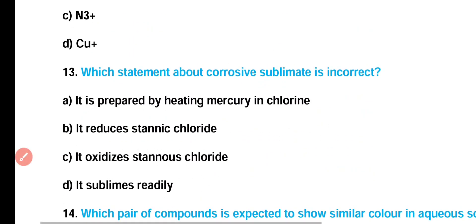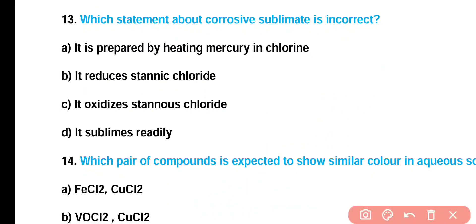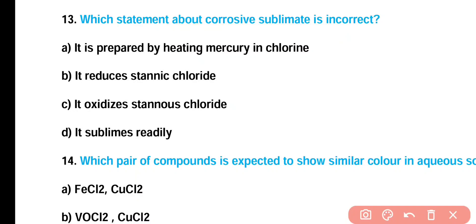Question number 13: Which statement about corrosive sublimate is incorrect — (A) it is prepared by heating mercury in chlorine, (B) it reduces stannous chloride, (C) it oxidizes stannous chloride, or (D) it sublimes readily? Correct answer is option B — corrosive sublimate oxidizes stannous chloride; it does not reduce it, so option B is the incorrect statement.